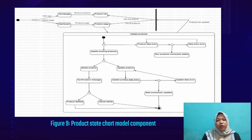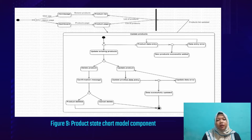Figure 9 shows the product state chart model component. Customers will search Abelacense items upon landing on the website; the customer can browse the product and view a particular product. If the administrator has successfully landed on the website, the administrator will handle the items: first, the administrator can add a new product; second, the administrator can edit existing product information; third, the administrator can delete an existing product.